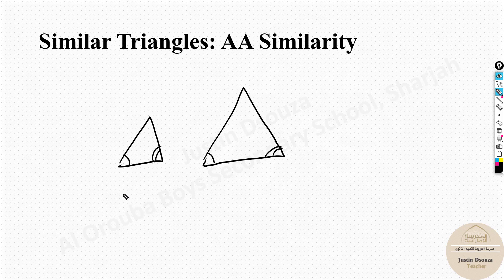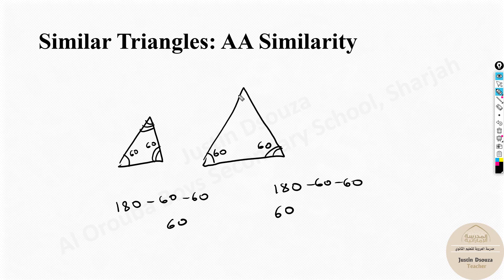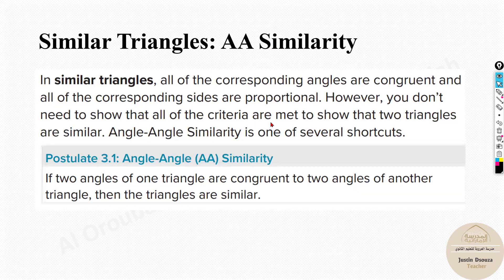From the triangle angle sum theorem, the third angle can be found: 180 minus the known angles. If two angles are both 60°, then on both sides it will be 180 minus 60 minus 60, giving the same third angle. Common sense: if two angles of a triangle are equal, the third must also be equal. So if all angles are equal, the triangles are similar. That's why AA is a valid similarity criterion - two congruent angles imply the third is also congruent, making the triangles similar.